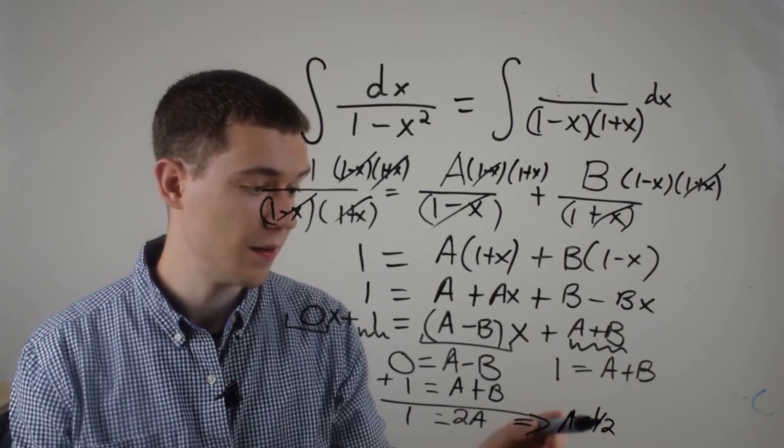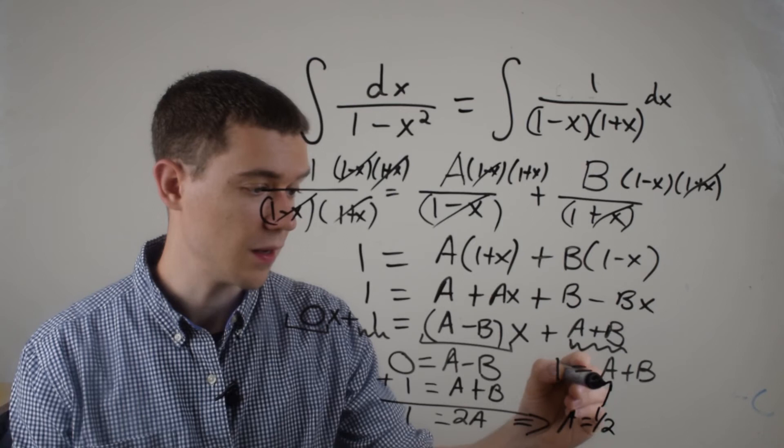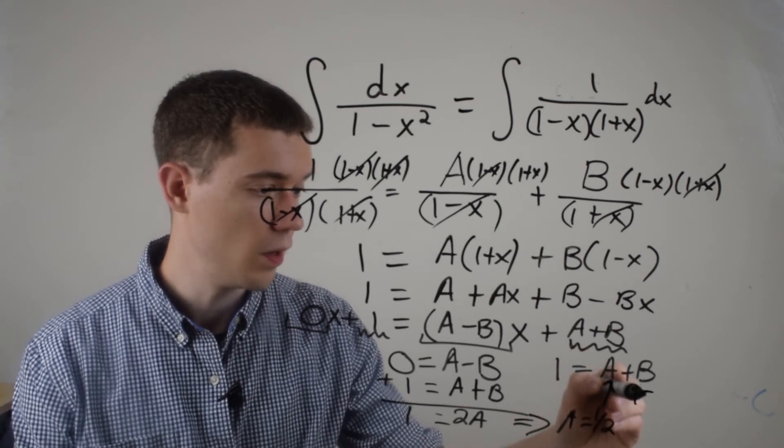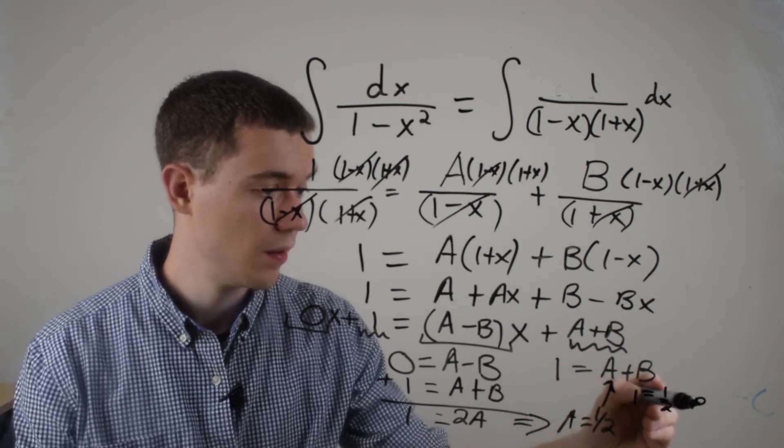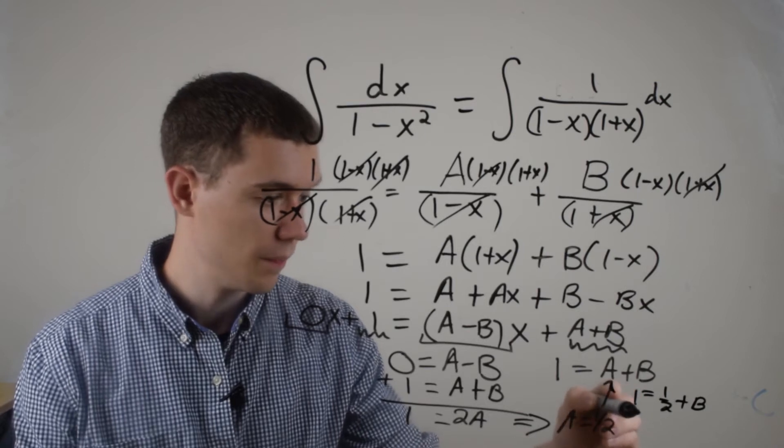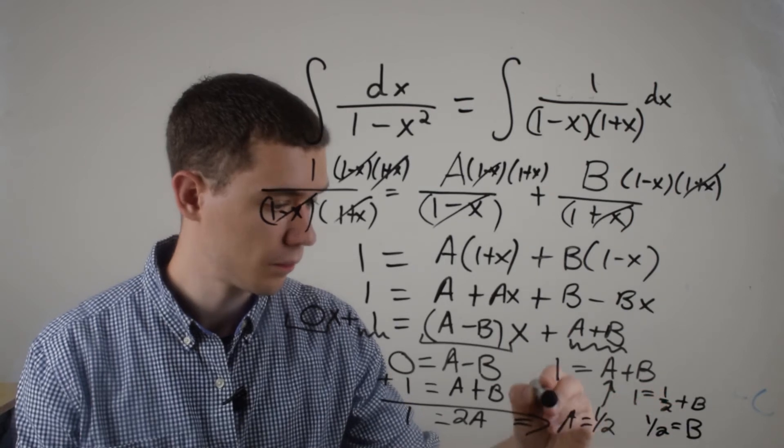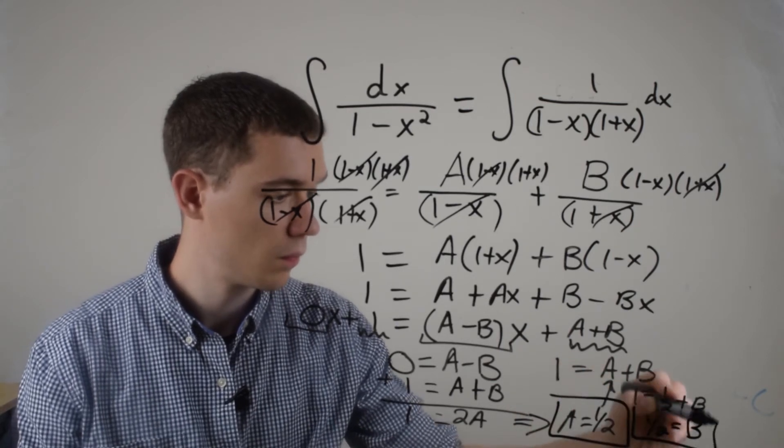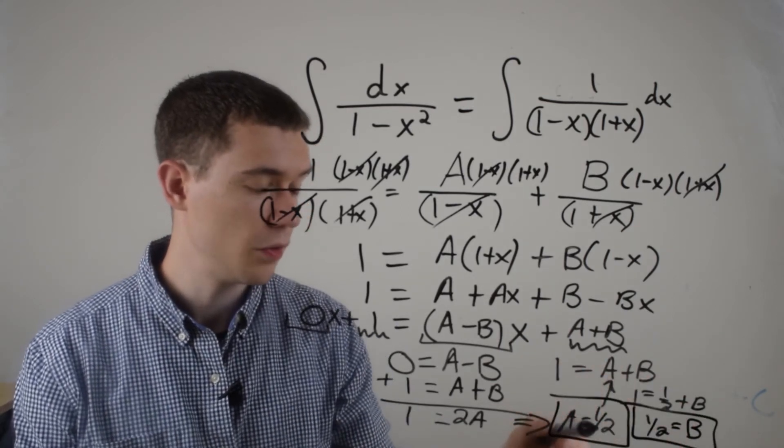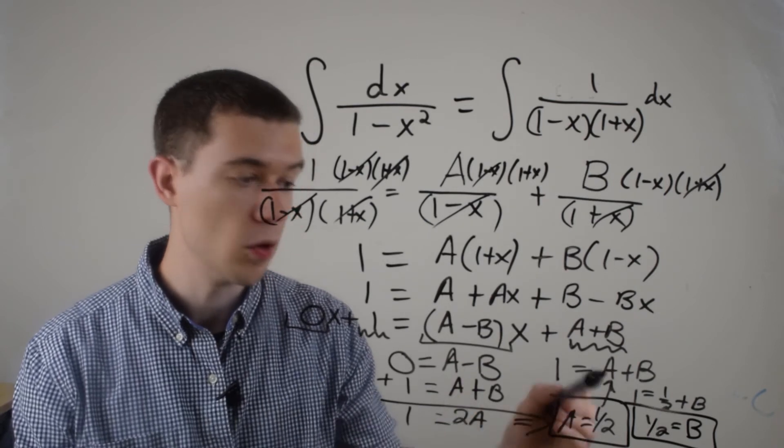And if I know what A is, well, I can just plug it back in here to get B. That would be 1 equals 1 half plus B. Or that B equals a half. 1 minus a half is a half.